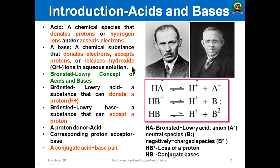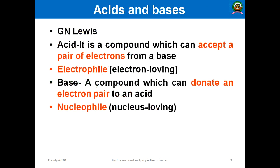This is known as the Lowry and Bronsted concept of acids and bases. Again, if we look at acids, another scientist called G.N. Lewis defined the acid in a different way.